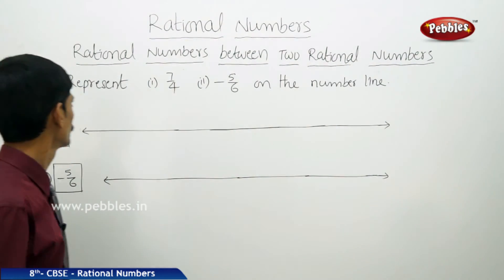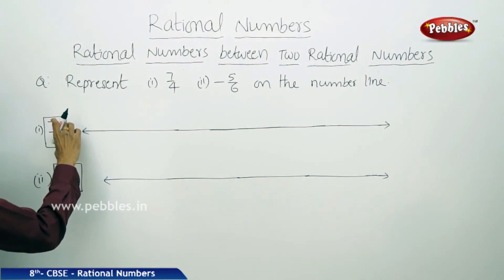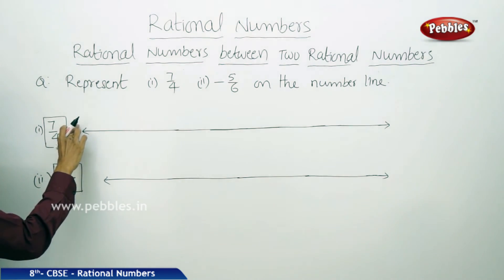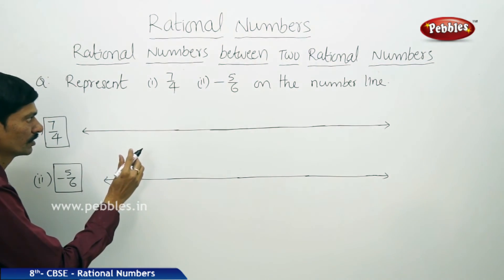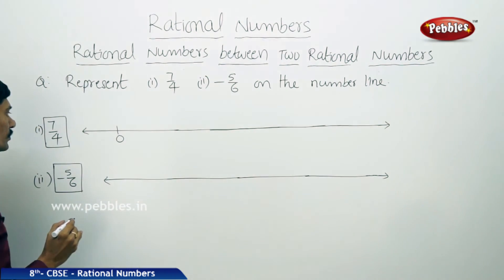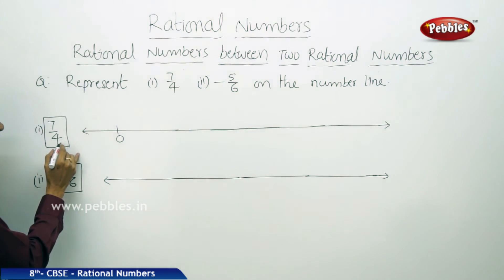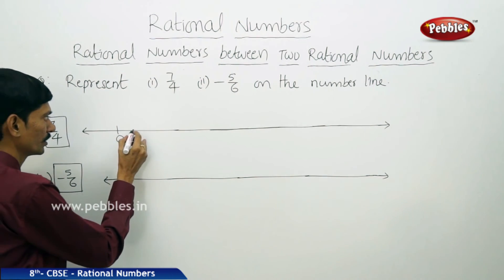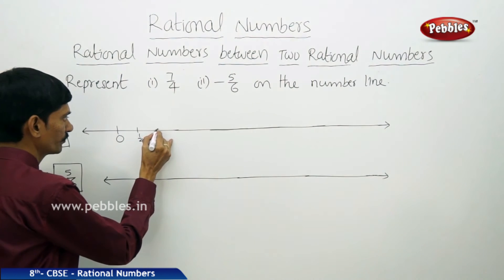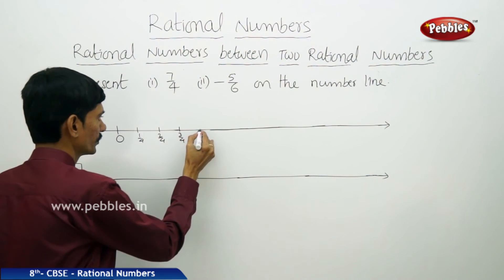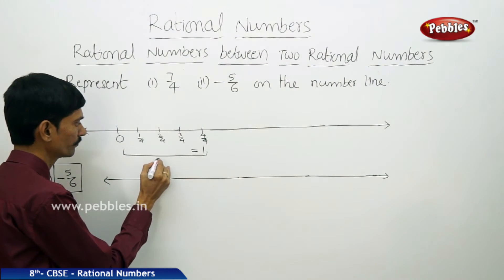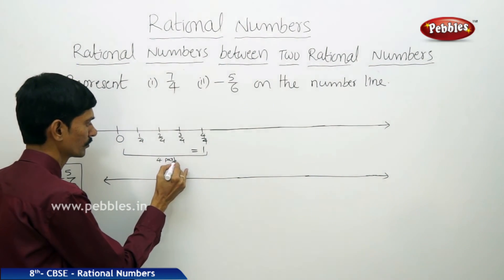Now let us solve a question: represent 7 by 4 on the number line. It is a positive rational number, so I am taking all numbers to the right of 0. The denominator is 4, so each unit is divided into 4 equal parts: 1 by 4, 2 by 4, 3 by 4, 4 by 4 equals 1. Then 5 by 4, 6 by 4, 7 by 4, and 8 by 4 equals 2. From 0 to 1 is divided into 4 equal parts.